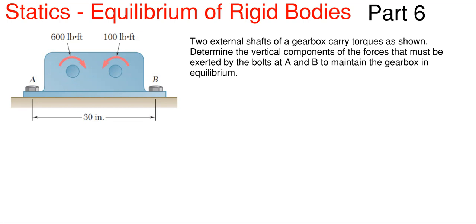So what we're going to be covering in today's video is statics, equilibrium of rigid bodies, and we are going to be finding reactions. We have this picture shown on the left and a description here that says two external shafts of a gearbox carry torques as shown of 600 pound-feet of clockwise rotation and 100 pound-feet of counterclockwise rotation and we have to determine the vertical components of the forces that must be exerted by the bolts at A and B to maintain the gearbox in equilibrium to keep this thing from rotating.